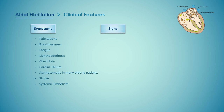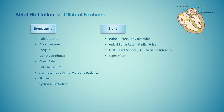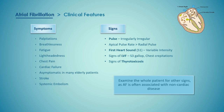Signs of atrial fibrillation include an irregularly irregular pulse, the apical pulse rate is greater than the radial rate, and the first heart sound is of variable intensity. There may be signs of left ventricular failure like basal lung crepitations. Examine the whole patient for other signs such as those of thyrotoxicosis, as AF is often associated with non-cardiac diseases.